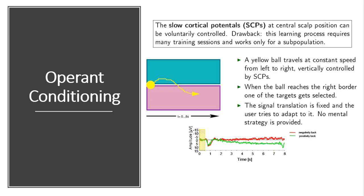This type of endogenous BCI can be used to control external applications, usually as a binary command. However, this is a very classical early version of brain-machine interfaces that doesn't rely on any advanced signal processing or machine learning algorithms. Instead, it involves training the human himself — which is equivalent to establishing a neuronal network in the brain, training it to generate specific signal patterns or slow cortical potentials.